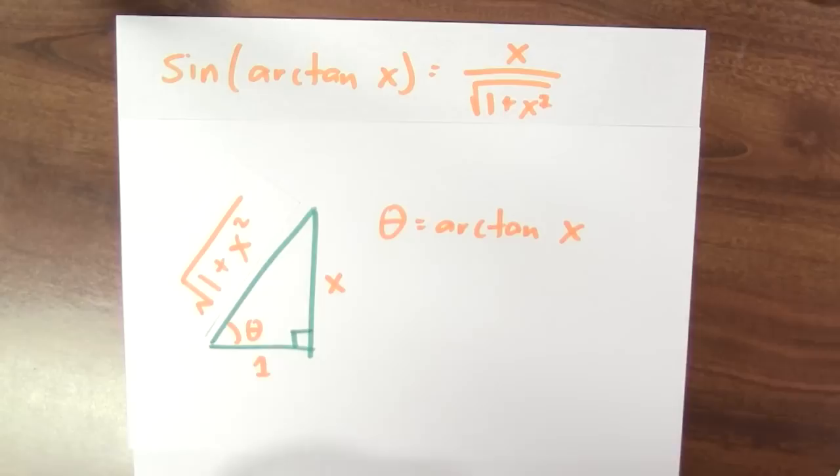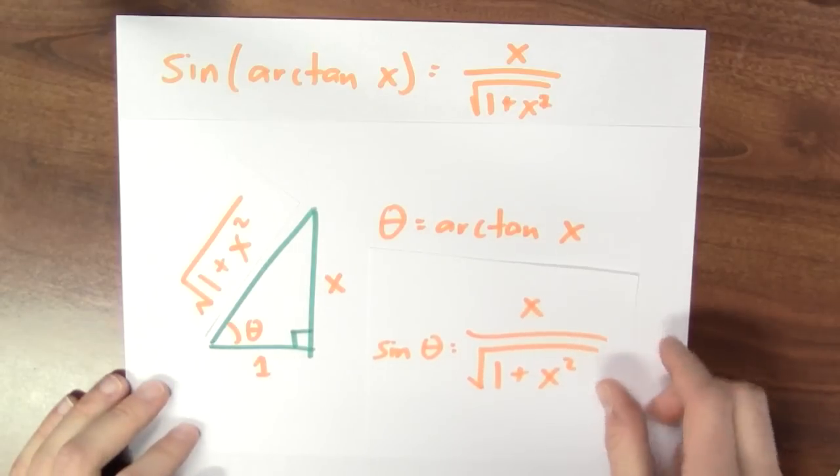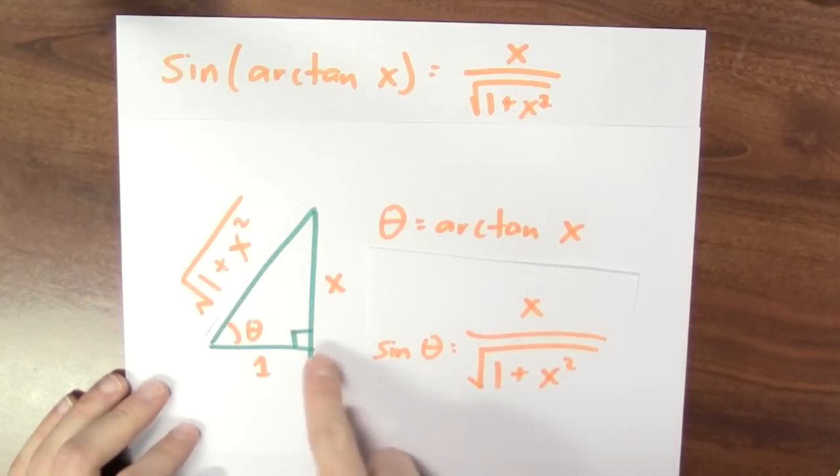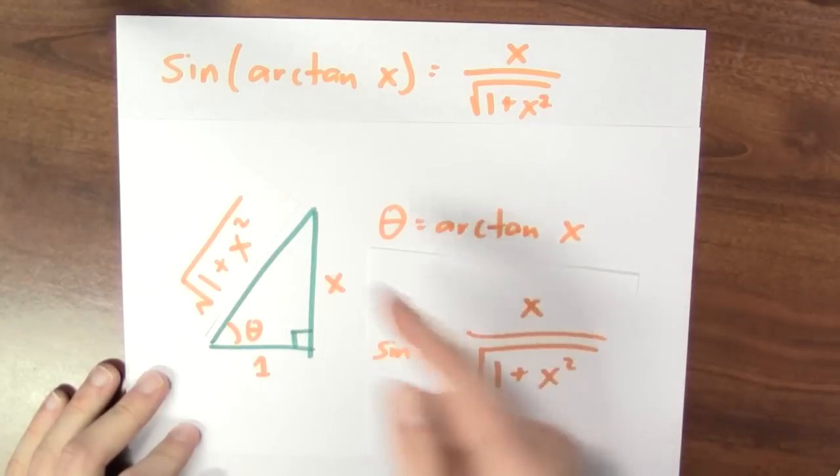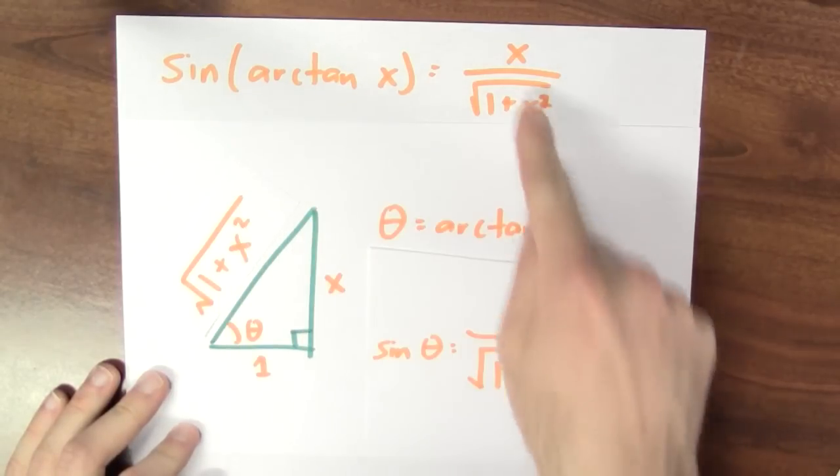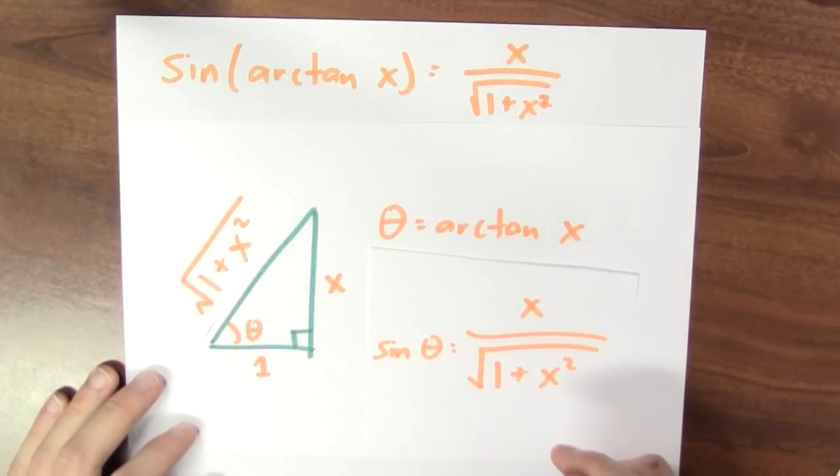And that gives me enough information to compute the sine of θ. The sine of θ is this opposite side, x, divided by the hypotenuse, the square root of 1 plus x squared. This tells me that the sine of arctan of x must be x over the square root of 1 plus x squared.